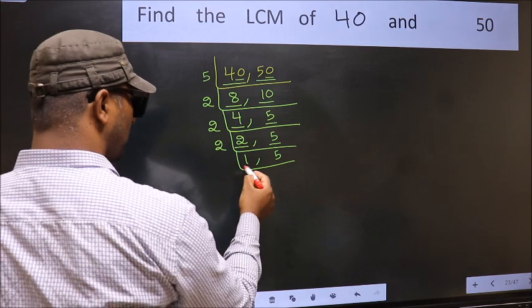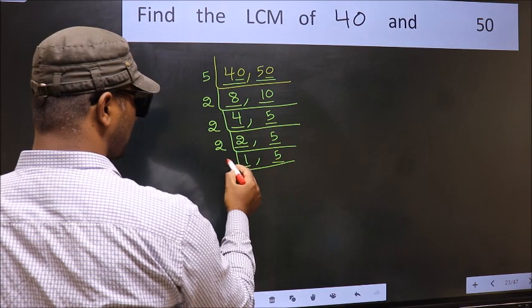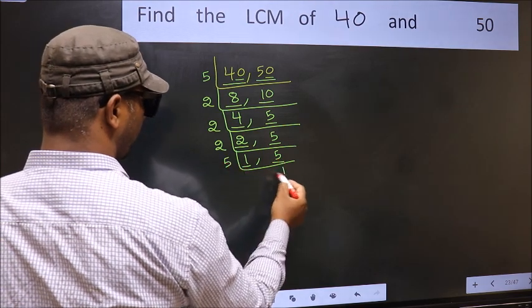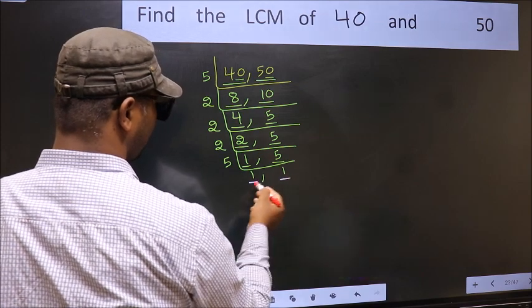Now we got 1, 1 here. So focus on the other number 5. 5 is a prime number, so 5 once is 5. So we got 1 in both the places.